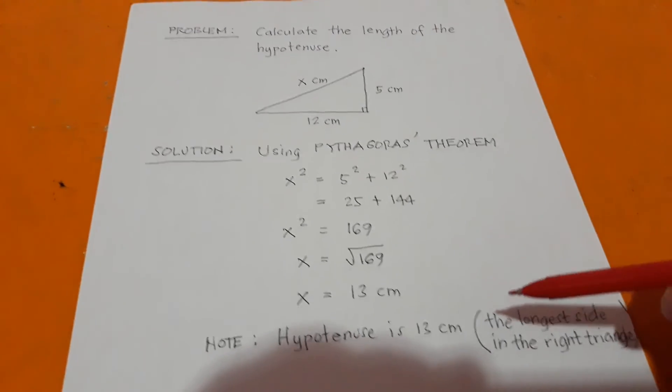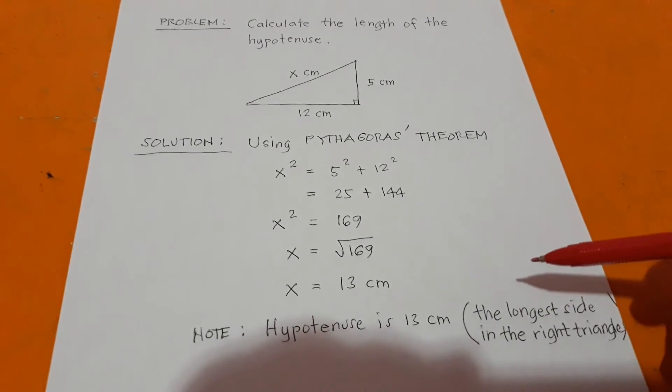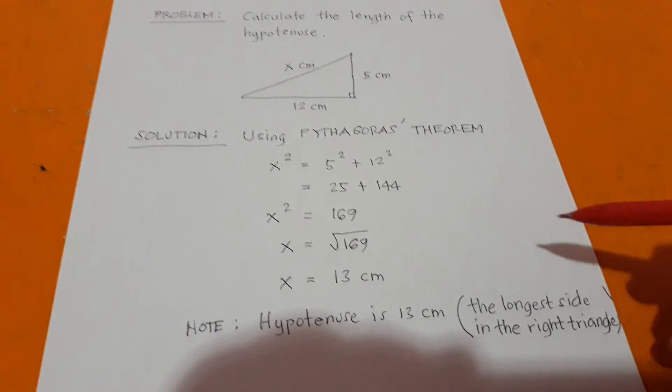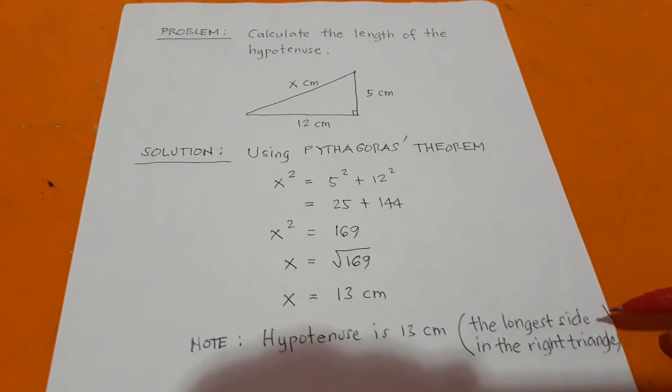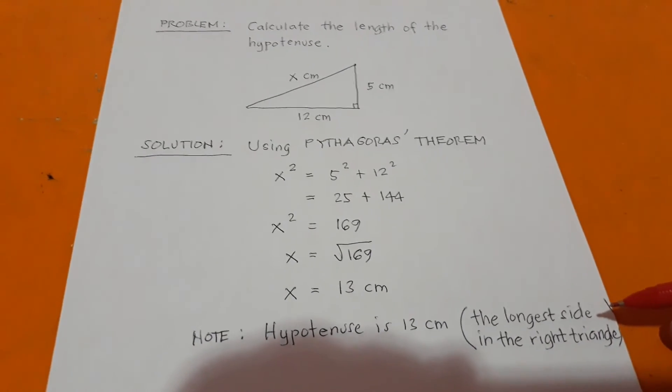So the hypotenuse in this problem is 13 centimeters, which is the longest side in the right triangle in this particular problem.